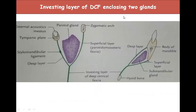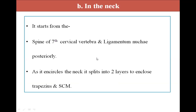The investing layer of the deep cervical fascia encloses two glands: the parotid and the submandibular gland. In the neck, it starts from the spine of the seventh cervical vertebra and ligamentum nuchae posteriorly.